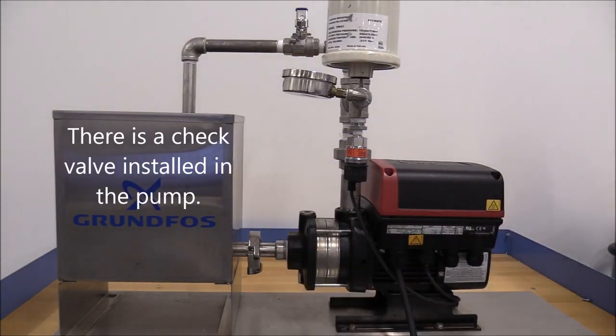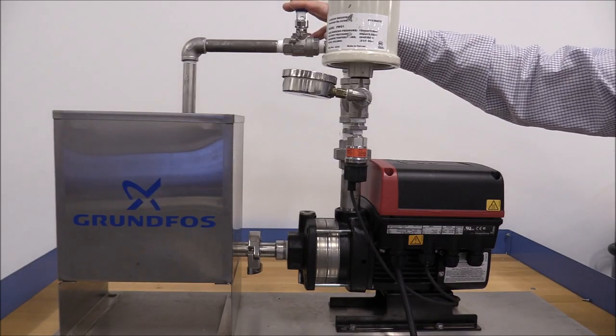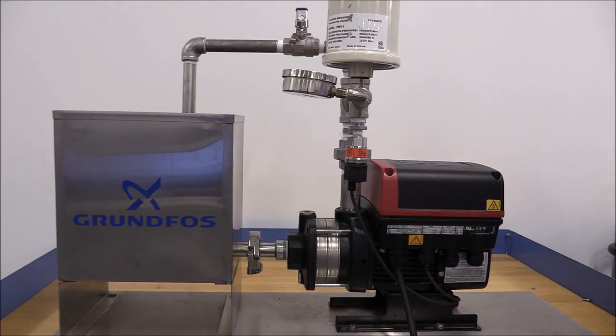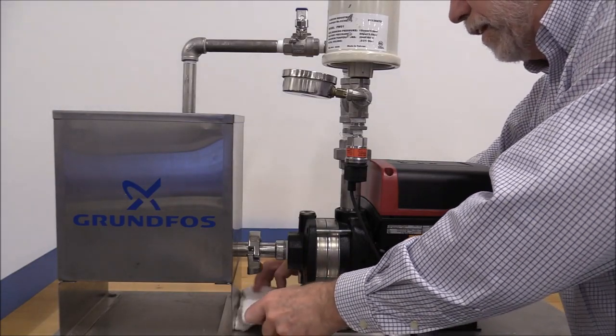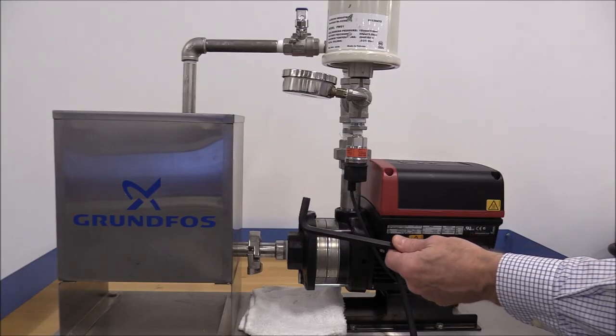We don't have a valve on the suction side of the pump, but we have closed the valve on the discharge side. Because I just have water, I'll put a rag underneath to catch any water that comes up. And then I have a 10mm Allen wrench.